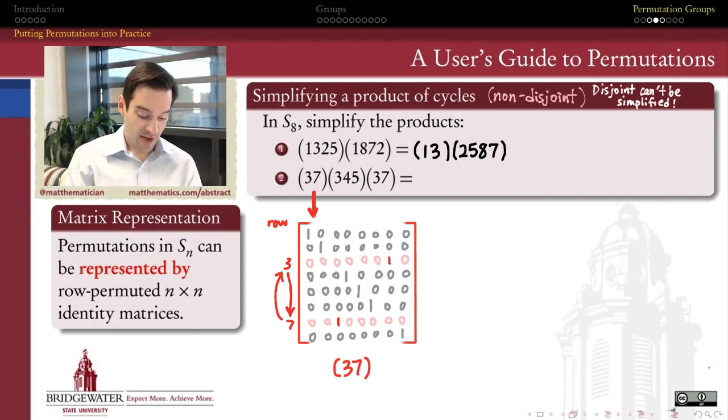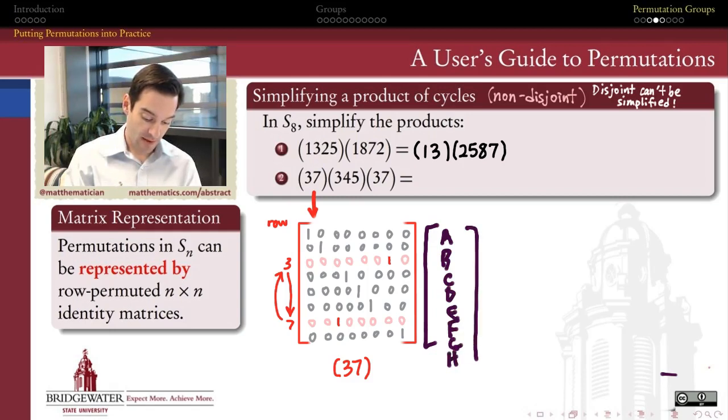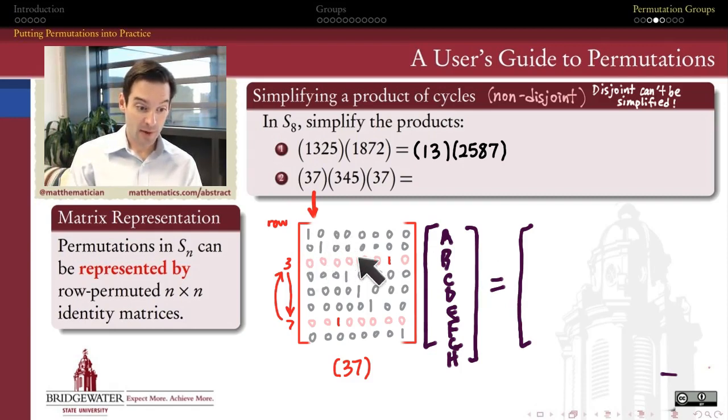Why this works, by the way, is that if I were to take this and multiply it by some column vector of eight things, A, B, C, D, E, F, G, H, if I were to do this product, matrix vector product, then what would end up happening when I did out this product is that A and B would stay put because they're just being multiplied by these unit basis vectors. But C would end up in position seven because the one ends up in that column right there, and then the G would end up back in position three because of what's happening in this row.